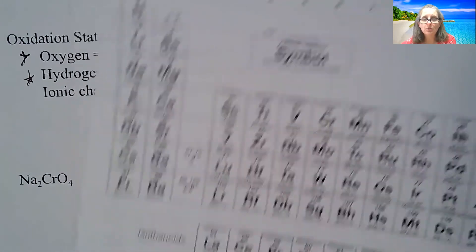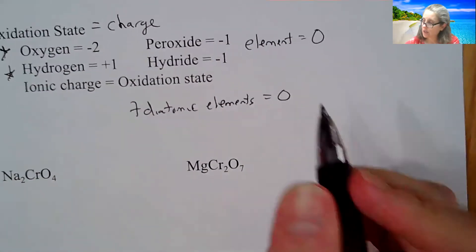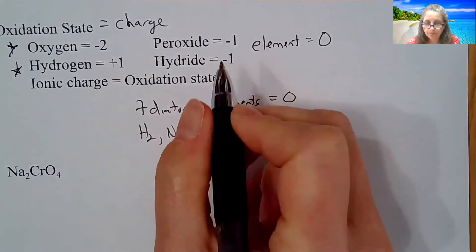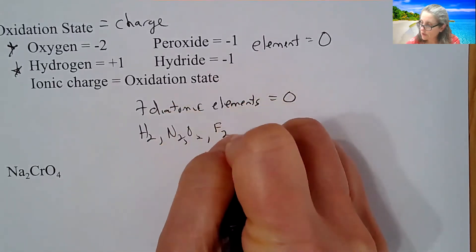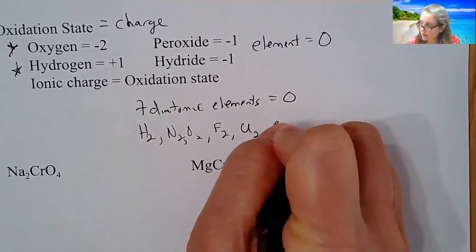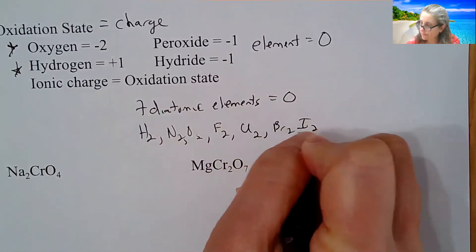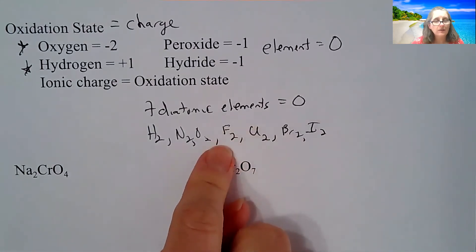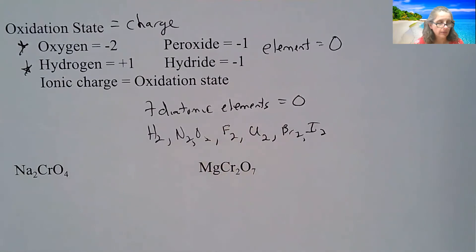The only weird one that you have to remember is, of course, hydrogen way over there. So diatomics is H2, N2, O2, F2, Cl2, Br2, I2. So those are still considered elements. So that is going to be what we are using here.